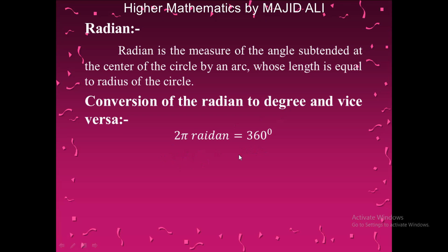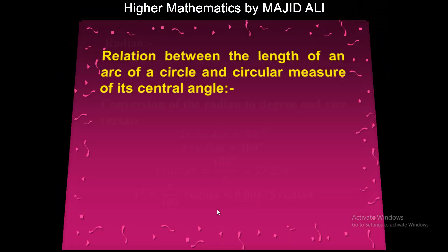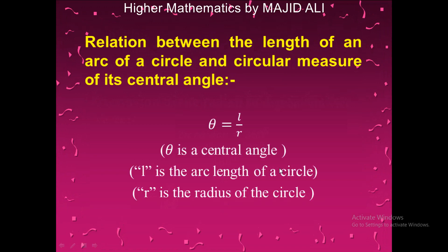Here is the conversion between radians and degrees. 2π radians equals 360 degrees. Dividing both sides by 2, we get π radians equals 180 degrees — this is the main conversion relation. Dividing both sides by π gives one radian in degrees; dividing both sides by 180 gives the conversion from degrees to radians.